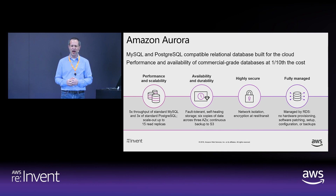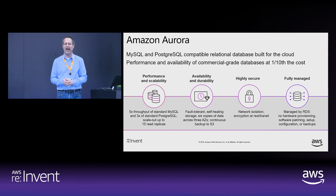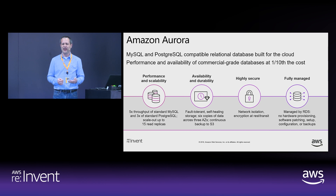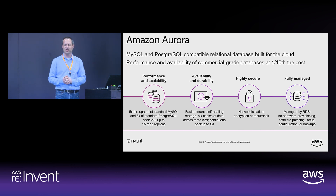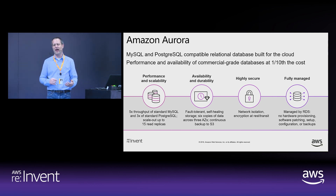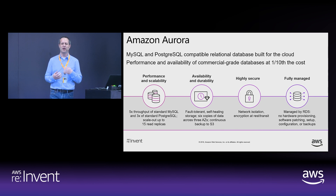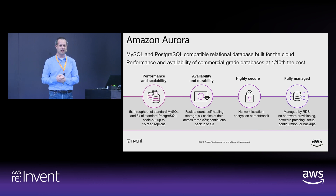In terms of security, Aurora can take advantage of all the security capabilities you might be familiar with from other AWS services — encryption, access control, and networking that hides your instances from others that shouldn't see them. It's fully managed by RDS, Amazon Relational Database Service. All the features you get with RDS are available: backups, hardware provisioning, choice of instance sizes, and multi-AZ with multiple availability zones for high availability.